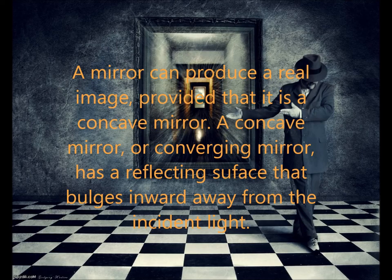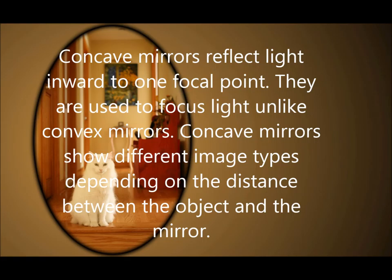It has a reflecting surface that bulges inward away from the incident light. Concave mirrors reflect light inward to one focal point. They are used to focus light, unlike a convex mirror. Concave mirrors show different image types depending on the distance between the object and the mirror.